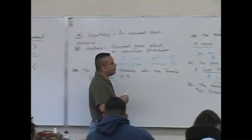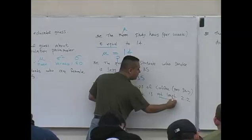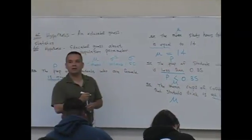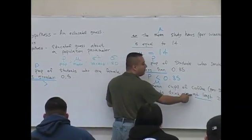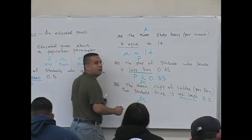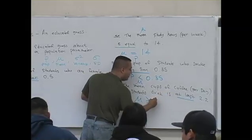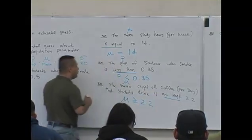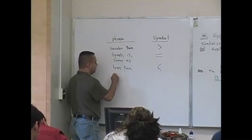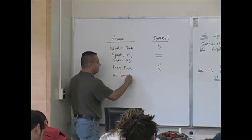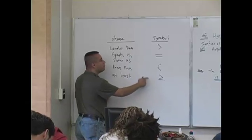For 'the mean cups of coffee is at least 2.2,' the phrase 'at least' corresponds to the greater than or equal to symbol (≥), so it becomes mu ≥ 2.2.